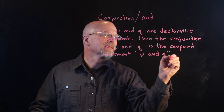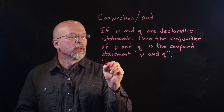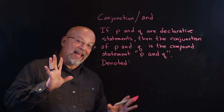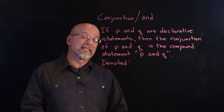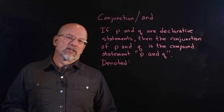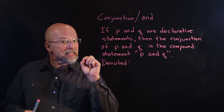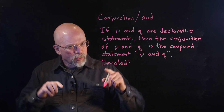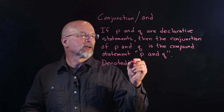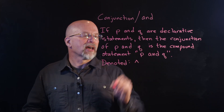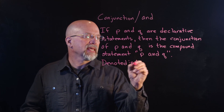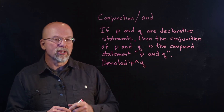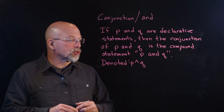Now let's talk about the way the conjunction is denoted. Like the negation, there are a couple of ways you might see it. In electronics, you may see a dot used to denote the 'and.' But sticking with mathematical representations, you'll see a caret (^), so you'll have P ^ Q. That's the way you denote it.